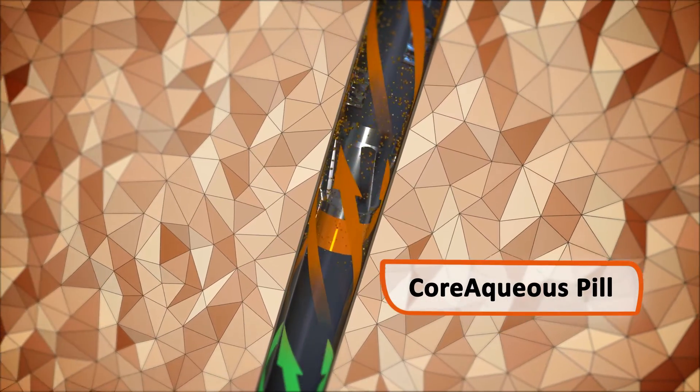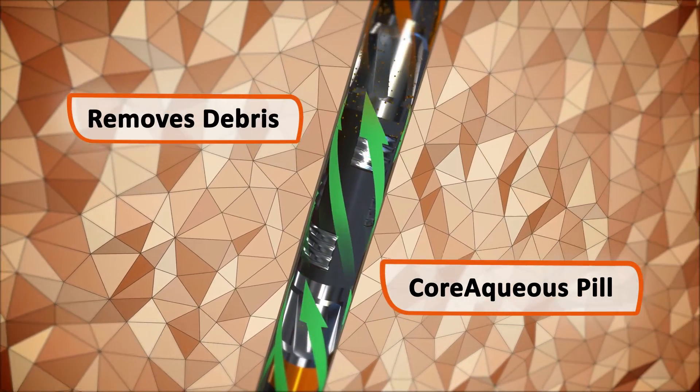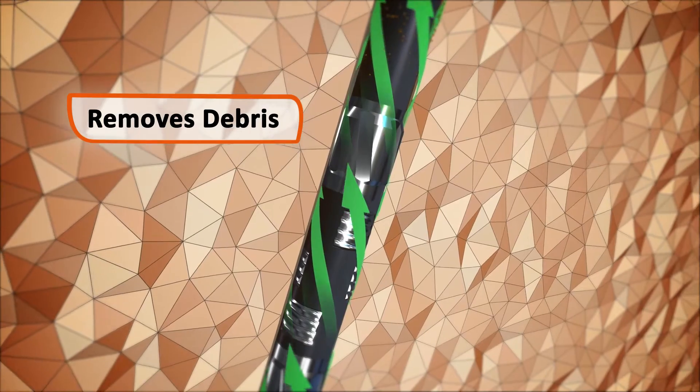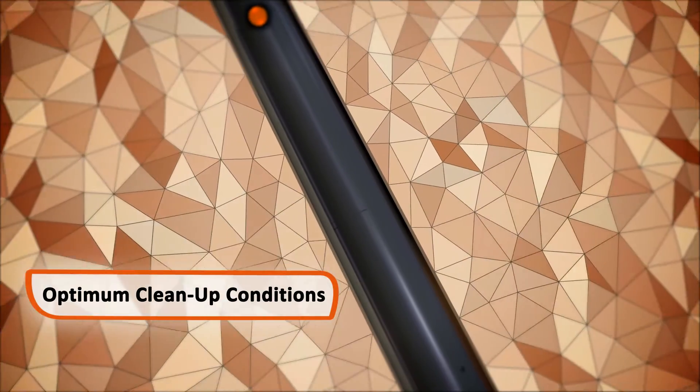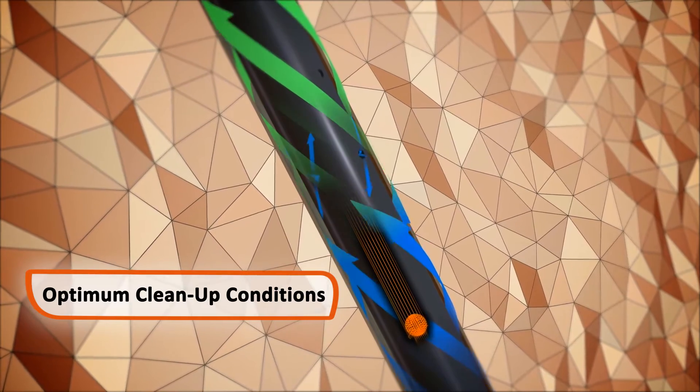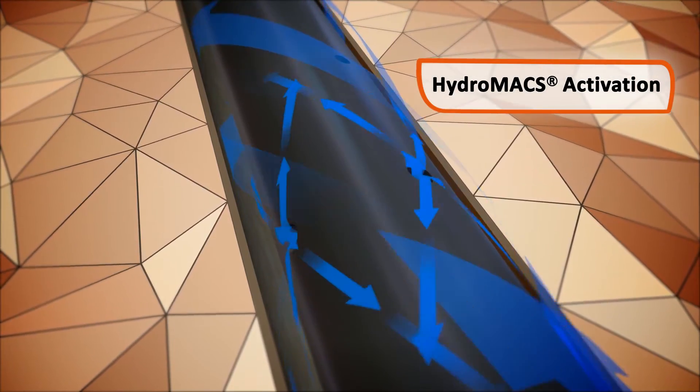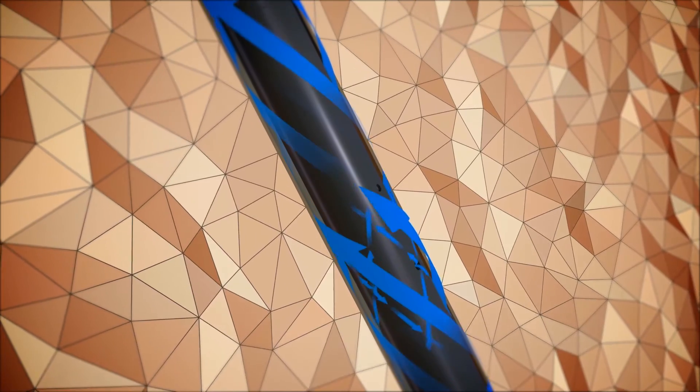Our core aqueous clean-up pill is pumped to assist the removal of debris and residues from the wellbore. To generate optimum clean-up conditions, a ball is dropped from surface to activate the hydromax, which creates turbulent flow and increases annular velocity in the upper wellbore.